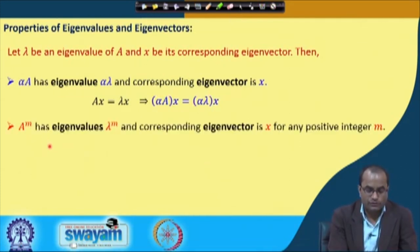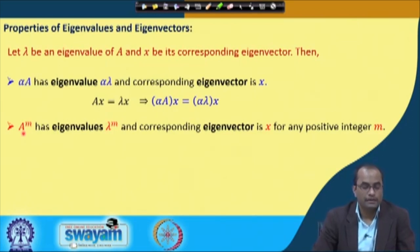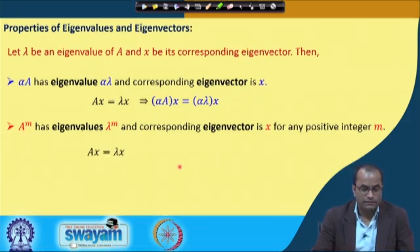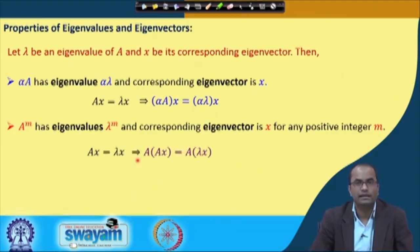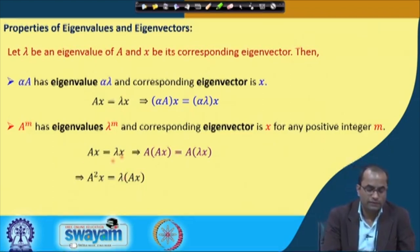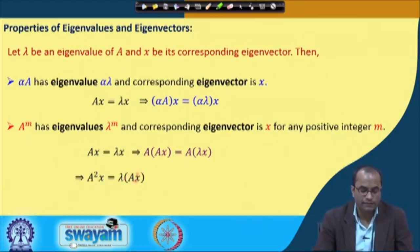Another property: A to the power m has eigenvalues lambda to the power m and the corresponding eigenvector is x again, for any positive integer m. For instance, A squared has eigenvalue lambda squared with the same eigenvector. We can see this because we have A x equal to lambda x, and multiplying by A on both sides, we get A squared x equal to lambda squared x.